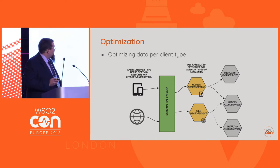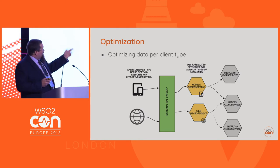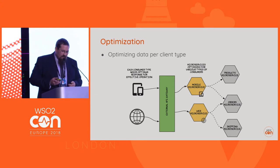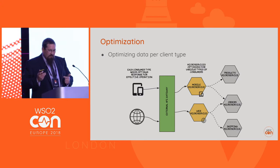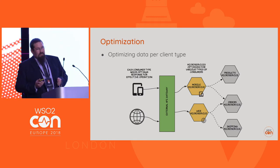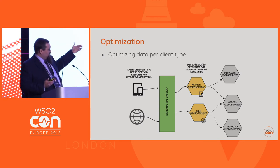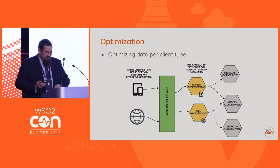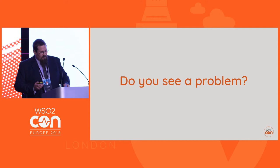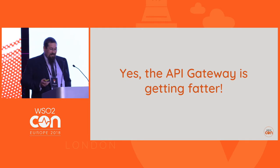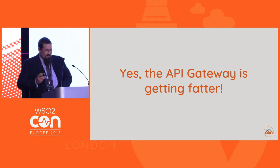Another option is that you can create a microservice layer to optimize your user experience for different channels. You might need to have modified data sets, aggregate the data, and present it in a different way for each application. That gives you the option to flexibly change those channels independently without affecting everything else. Now, if you can see through the slides, there's a problem — who ate all the APIs? The API gateway is getting fatter.